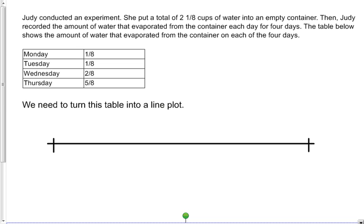We're going to turn that table into a line plot. Now, line plots always start at zero. And with fractions, they end in one. Now, I'm looking at my table and noticing that my denominator for each fraction is eight, which means I need to split my line plot into eight pieces.